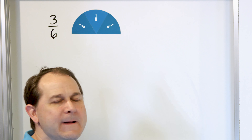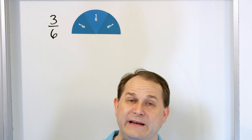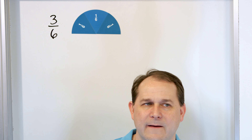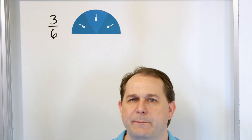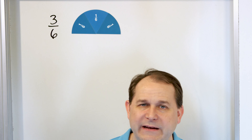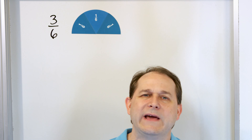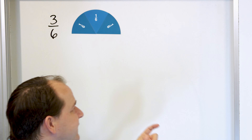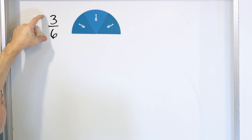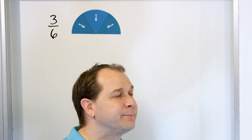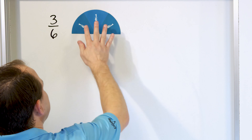Why is that? Because if you have a pizza that you cut into six pieces but I take three of the pieces, then I've taken half of the pizza. So we want to have a way to take any fraction and simplify it into a simpler version of itself.